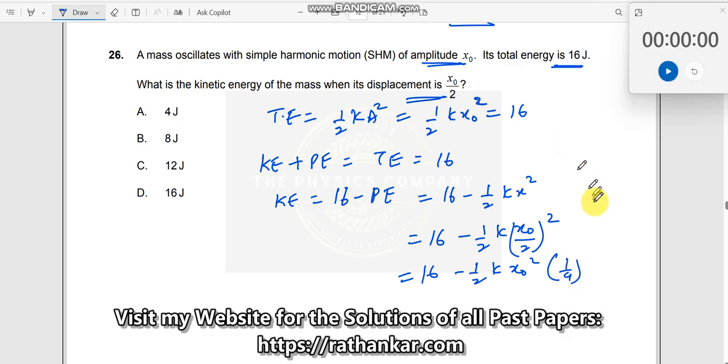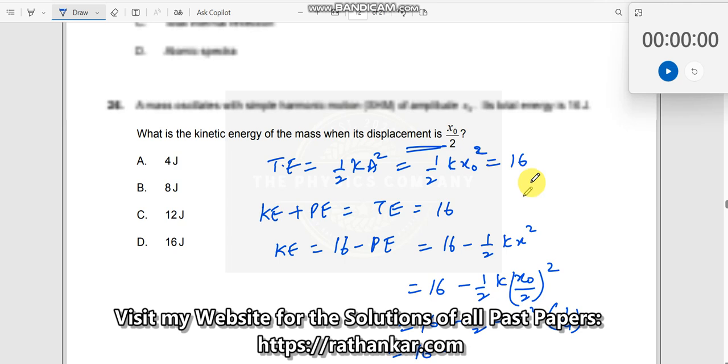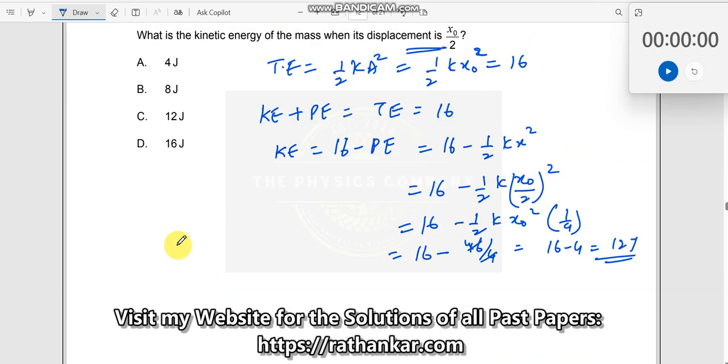When I do this, what do I get? Let me write it down here. So this will become 16 minus, what is half k X0 square? Half k X0 square is seen to be 16, right? So I will write this as 16 by 4, 4 runs out for 4s, so you get this as 16 minus 4 which is equal to 12 joules. So the answer here is 12 joules.